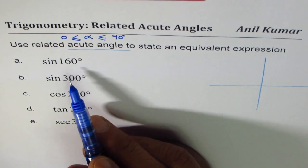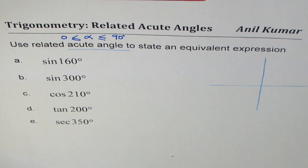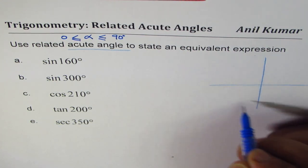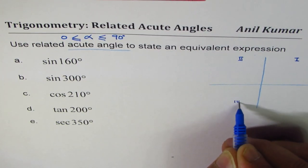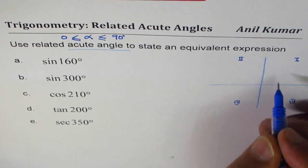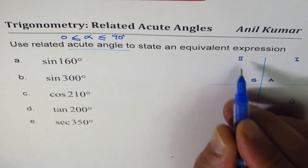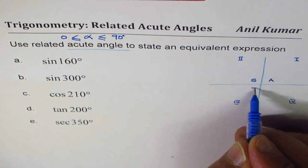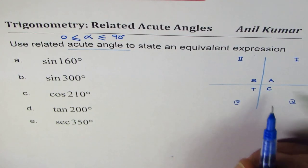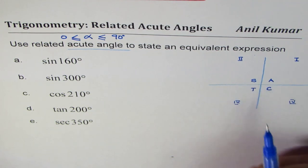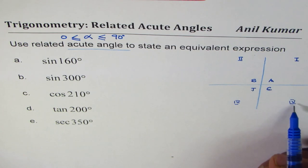I'll use a strategy to answer such questions using two concepts. One is the four quadrants: quadrant one, quadrant two, quadrant three, and quadrant four. All trigonometric ratios are positive in quadrant one. Sine is positive in quadrant two, tan is positive in quadrant three, and cosine is positive in quadrant four. We can remember this as 'All Silver Tea Cups,' or the CAST rule — C, A, S, T — starting from quadrant four.